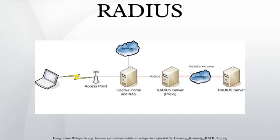Accounting is described in RFC 2866. When network access is granted to the user by the NAS, an accounting start is sent by the NAS to the RADIUS server to signal the start of the user's network access. Start records typically contain the user's identification, network address, point of attachment and a unique session identifier. Periodically, interim update records may be sent by the NAS to the RADIUS server, to update it on the status of an active session. Interim records typically convey the current session duration and information on current data usage.